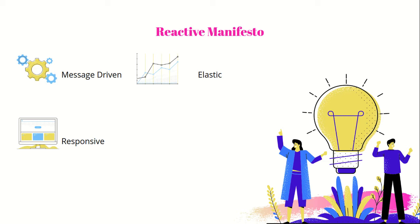Responsive. The system should react in a timely manner at all times. Systems should be robust enough to respond within a given timeframe. It helps in dealing with failures early. Responsiveness also ensures that you have a time limit to respond. If the time limit is breached, it is treated as a failure. In case of failure, the system should respond in a timely and effective manner.